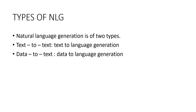Now we are going to discuss the different types of NLG. Natural Language Generation is of two types: one is text-to-text, that is text to language generation, and the other is data-to-text, that is data to language generation.